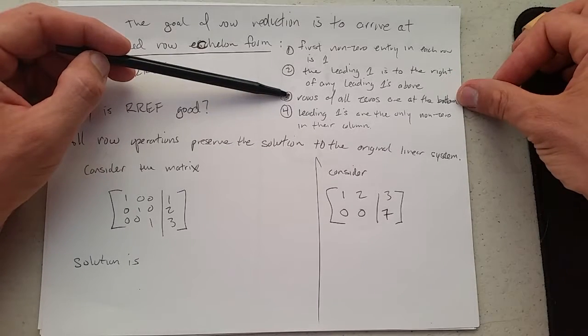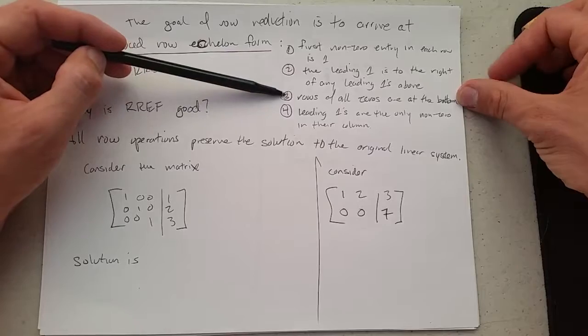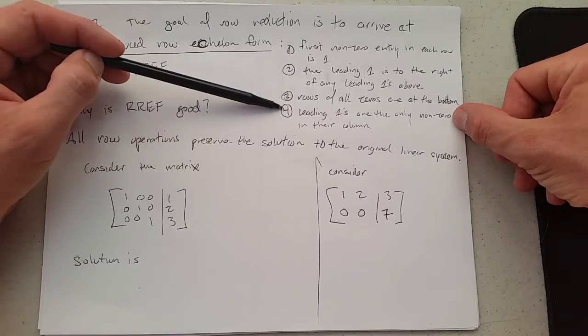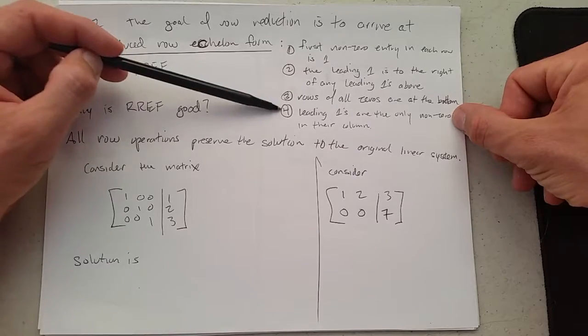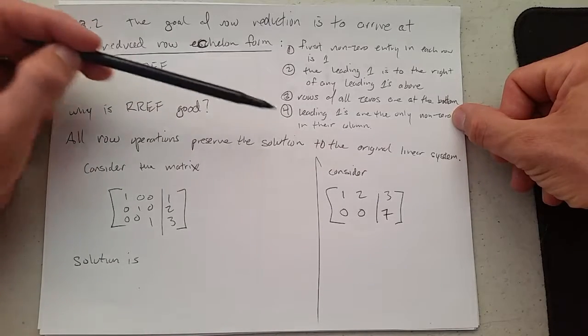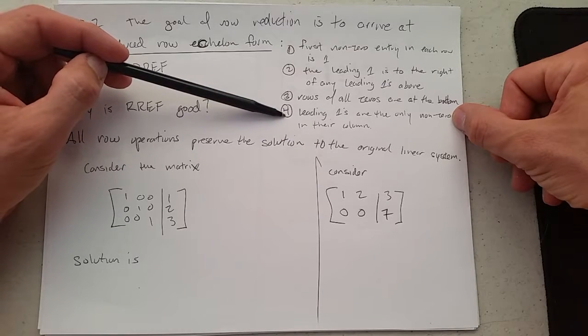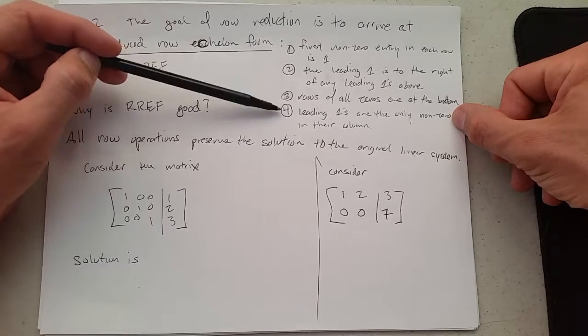Rows of all 0's are at the bottom, so if any of those useless 0 rows, you can use swaps to get them to the bottom. And all of our leading 1's, this last one is to do a complete reduction instead of back substitution. I'm going to go with complete reduction here.